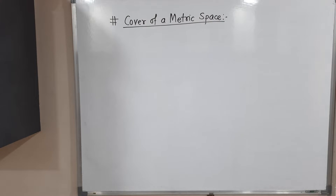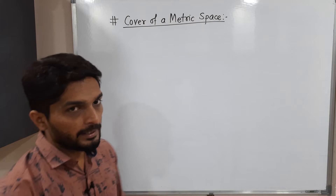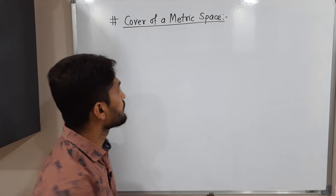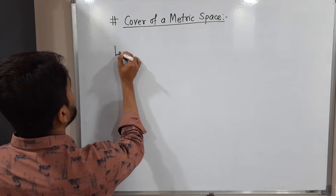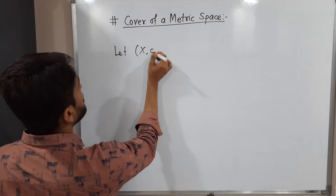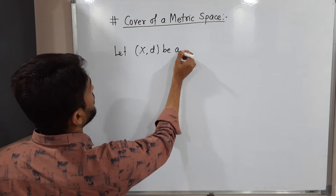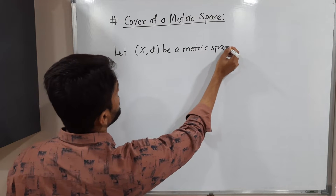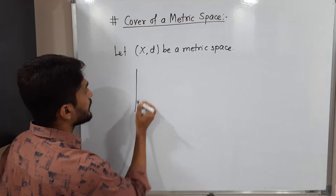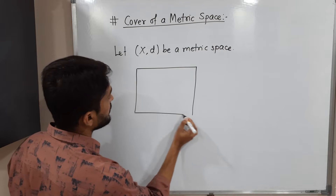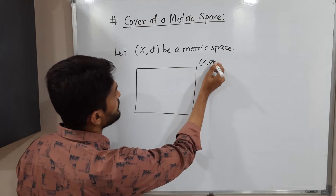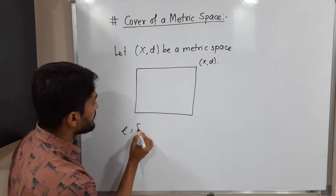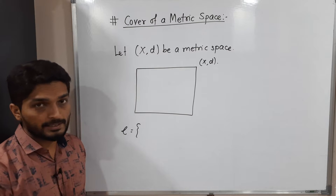Let us discuss the concept of cover of a metric space. Let X, D be a metric space. Suppose this is our metric space X, D. And we have a collection, script C, of subsets of metric space X, D.